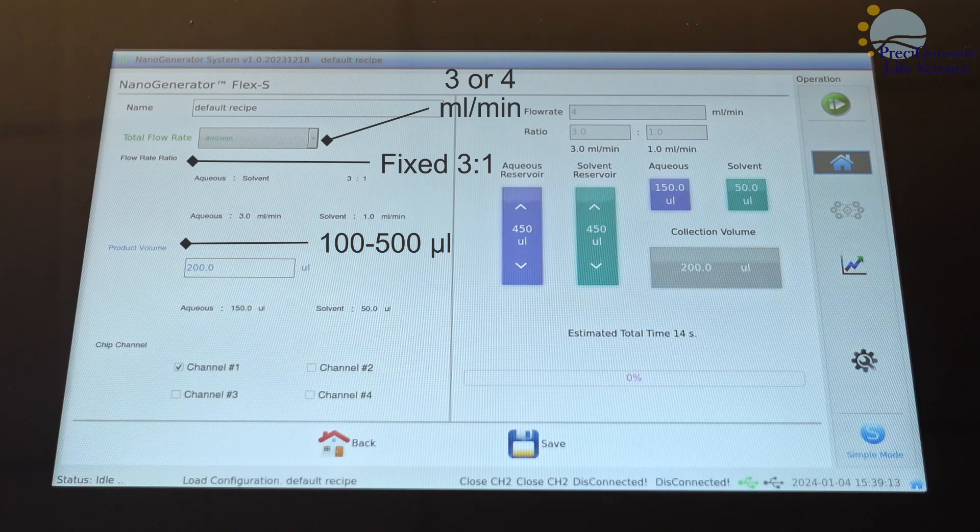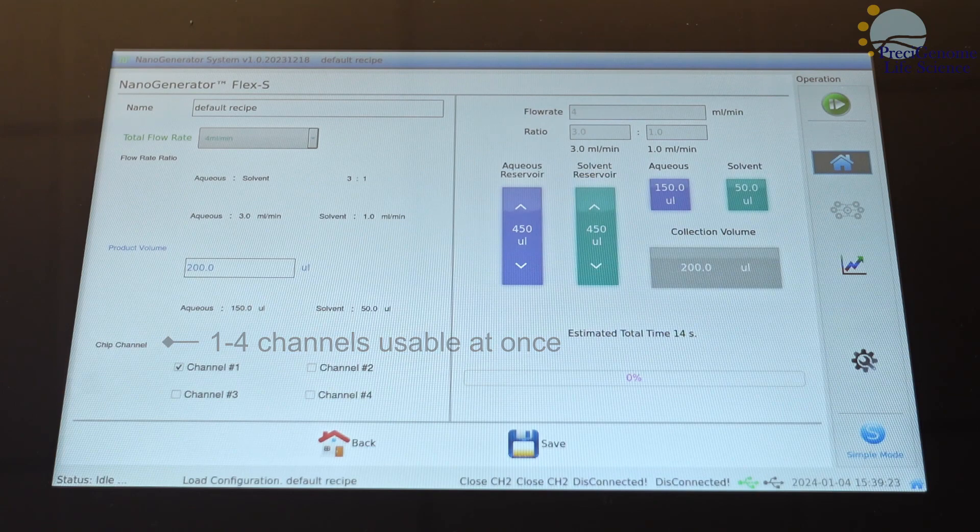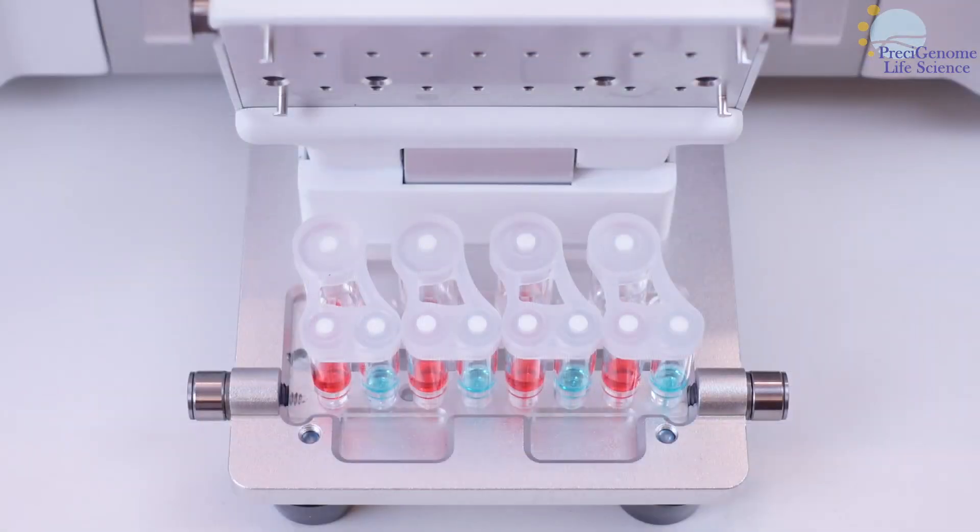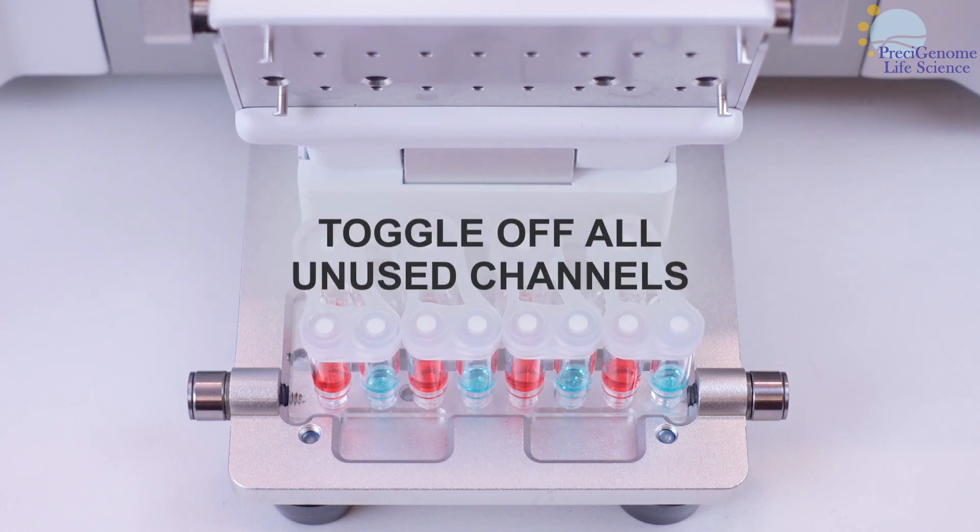For higher volumes, see our Flex M model. The chip channel may be set to whichever ones are currently active. These channels are numbered left to right in ascending order. While up to 4 channels may be used at once, keep all unused channels off to prevent air leakage.